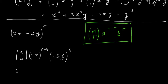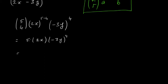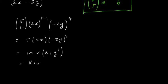So what we're going to look for here is 5 choose 4. Our a is our first term, which is 2x, raised to the power of 5 minus 4. And then our second term, which is minus 3y, is raised to the power of 4. So this is actually our fifth term. Now, 5 choose 4 is the same as 5 choose 1 by the twin rule, which is just 5. We have 2x raised to the power of 5 minus 4, which is just 1, and then minus 3y to the power of 4. So that's 5 times 2, which is 10, times x, times minus 3 to the power of 4. Now 3 to the power of 4 is 81, and minus to the power of 4 will just be positive. So we end up with 10 times 81 times x times y to the power of 4, which is 810xy to the power of 4. This is our fifth term of this particular expansion.